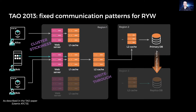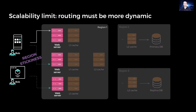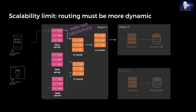Tao used to rely on fixed communication patterns to provide user-centric read-your-writes. Requests from a user are routed to the same web server cluster and communicate with the same Tao L1 cache cluster. Every layer of cache is write-through, and we send reads along the same path in which the writes were done to provide read-your-writes. Both of these communication patterns became a scaling limit as we grew. Since 2013, a lot has changed in our systems. Failovers and disaster rerouting allowed us to improve availability and resilience of our overall system.